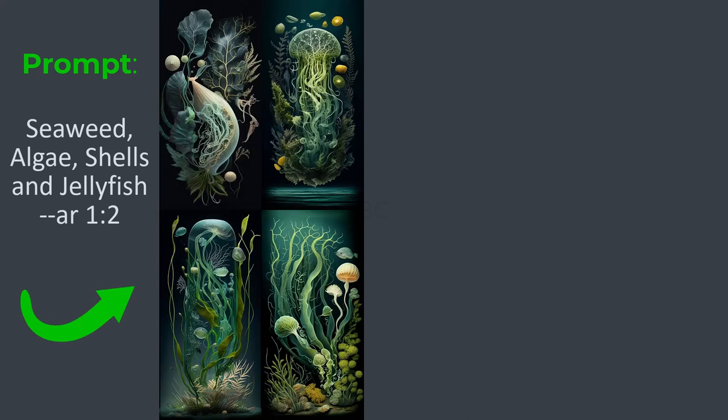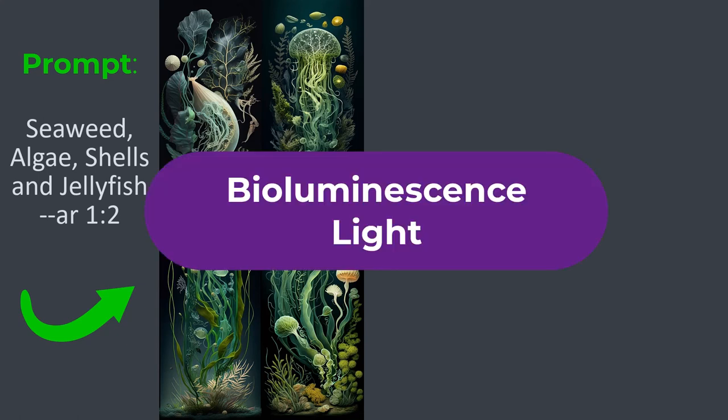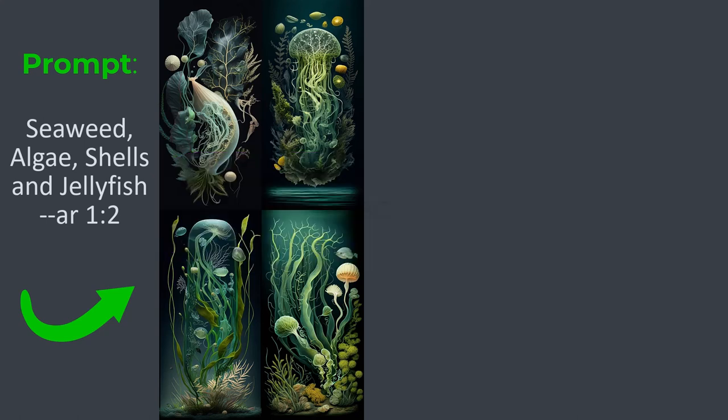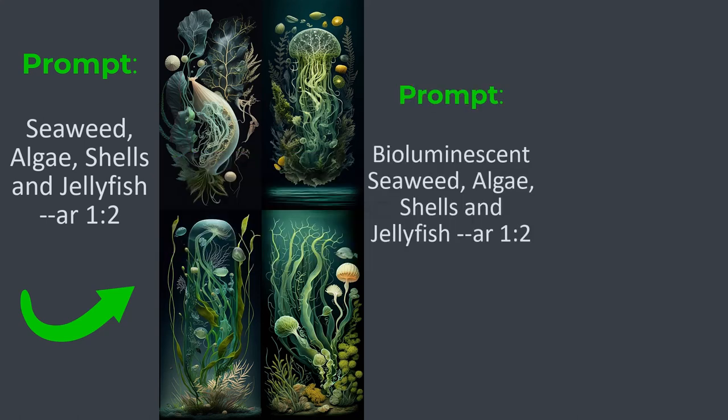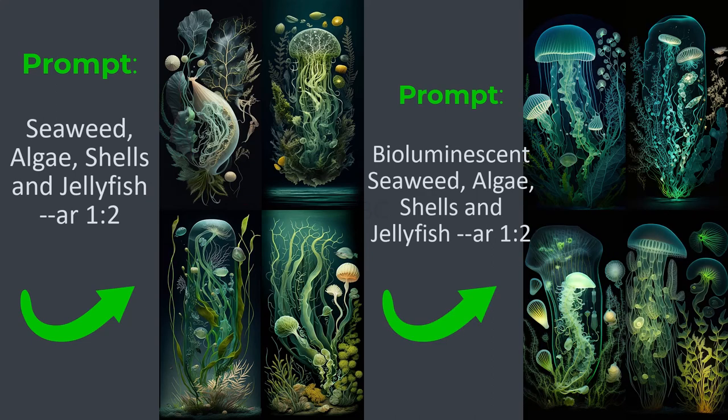Now I will add one special keyword: bioluminescence light, which is a quite magical light emitted by some living things. So I will use the same prompt but with the addition of the word 'bioluminescent'. Now we get this result having the magical glowing light, and it looks much better than the simple one.